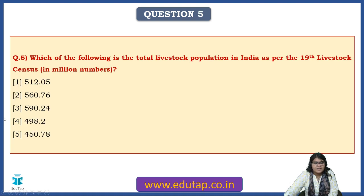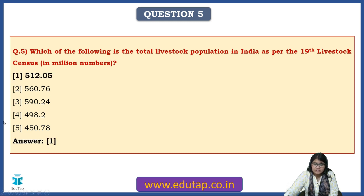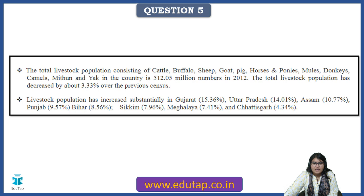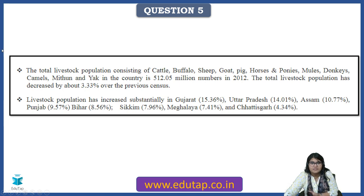Fifth question: what is the total livestock population in India as per the 19th livestock census, in millions? The answer is 512.05 million. The total livestock population includes cattle, buffalo, sheep, goat, pig, horses, ponies, mules, donkeys, camels, mithun, and yak. Compared to the previous census, there was a decrease of 3.33%. However, livestock population has seen a substantial increase in the states of Gujarat, Uttar Pradesh, and Assam.